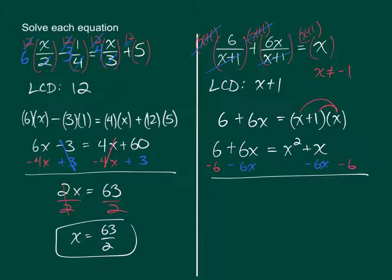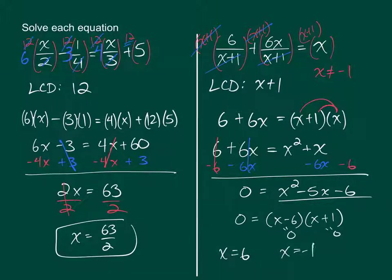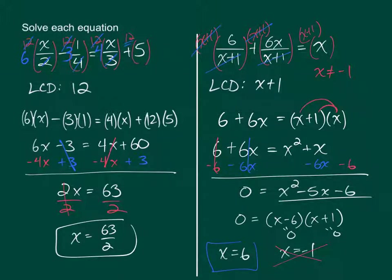When we cancel these things out — reducing those terms to 0 — and combine the remaining terms on the other side, we can factor the right side to get 0 equals X minus 6 times X plus 1. Setting each factor equal to 0, we get X equals 6 and X equals negative 1. The very last step is to check: does either answer match our restricted value? Yes — negative 1 matches our restricted value, so X equals negative 1 is no good. But X equals 6 does not match the restricted value, so that is definitely a good answer.